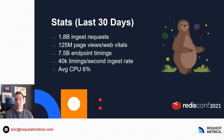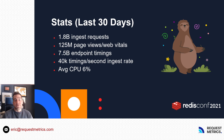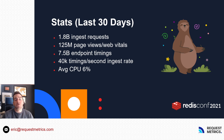Request Metrics launched last year, so it's still a fairly new product. However, we've got quite a few customers sending us a lot of data. Just in the last 30 days, we've had 1.8 billion ingest requests to the Nginx front door — that equates to about 700 requests per second all the time. Of that, 125 million page views or web vital records came in, and 7.5 billion endpoint timings. At peak, the system can do about 40,000 timings per second ingested. We're only doing about 700 per second right now, and our average CPU is only about 6% — all on two commodity physical machines that each cost us only $150 a month.